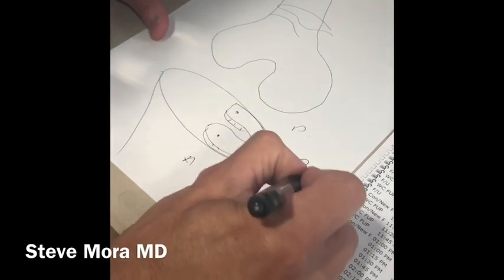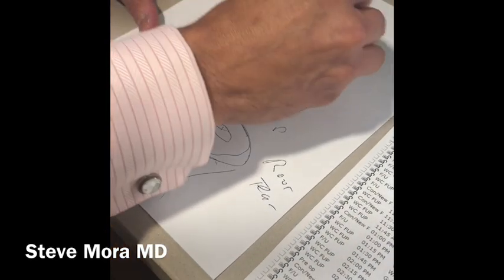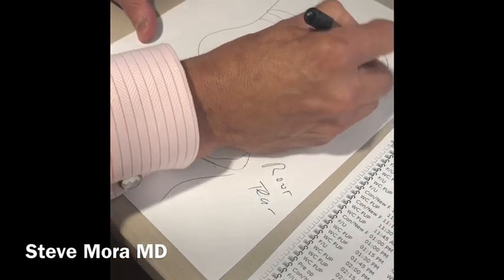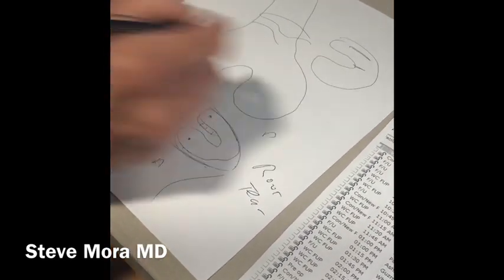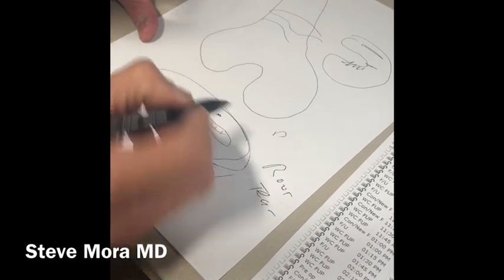So when you have a root tear, root tear, it's very different than other tears. Many tears, if you look over here, when you have a meniscus tear, you can have a radial tear, you can have a longitudinal tear, you can have a complex tear, but root tear is very different. Root tear happens right here.